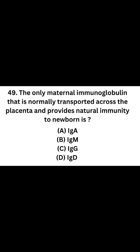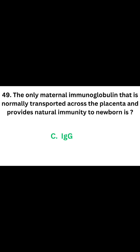Question number 49. The only maternal immunoglobulin that is normally transported across the placenta and provides natural immunity to the newborn is: Option A: IgA. Option B: IgM. Option C: IgG. Option D: IgD. The correct answer is Option C, IgG. IgG can cross the placenta and provide natural immunity to the newborn.